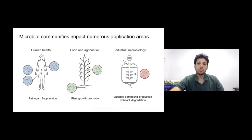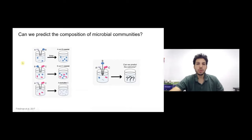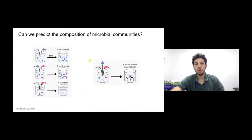A few years ago when I was a postdoc in Jeff Gore's lab at MIT, we set out to do a project looking at whether it's possible to predict the composition of a microbial community based on the composition of pairs. If I know in co-cultures of pairs how much of each species there is, am I able to predict how much of each species there will be when I mix multiple species together?